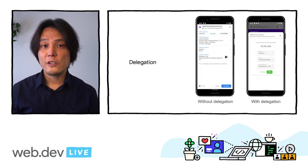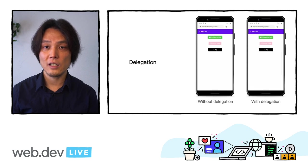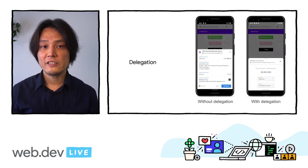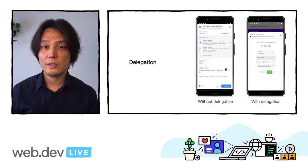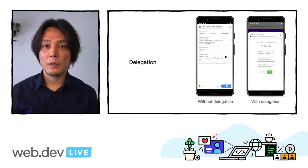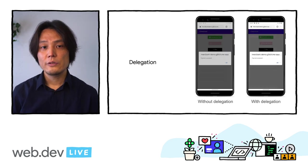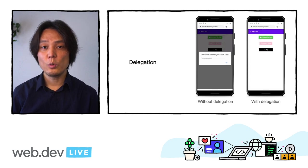Delegation is a new feature in the Payment Handler API that allows a payment app to provide all the information requested by the merchant, including shipping and contact information. Previously, this information used to always come from the browser. This enhances the capability for a payment app to handle the entirety of a payment flow. Together, delegation and Skip the Sheet enable payment apps to more easily transition their existing flows to the Payment Handler API.